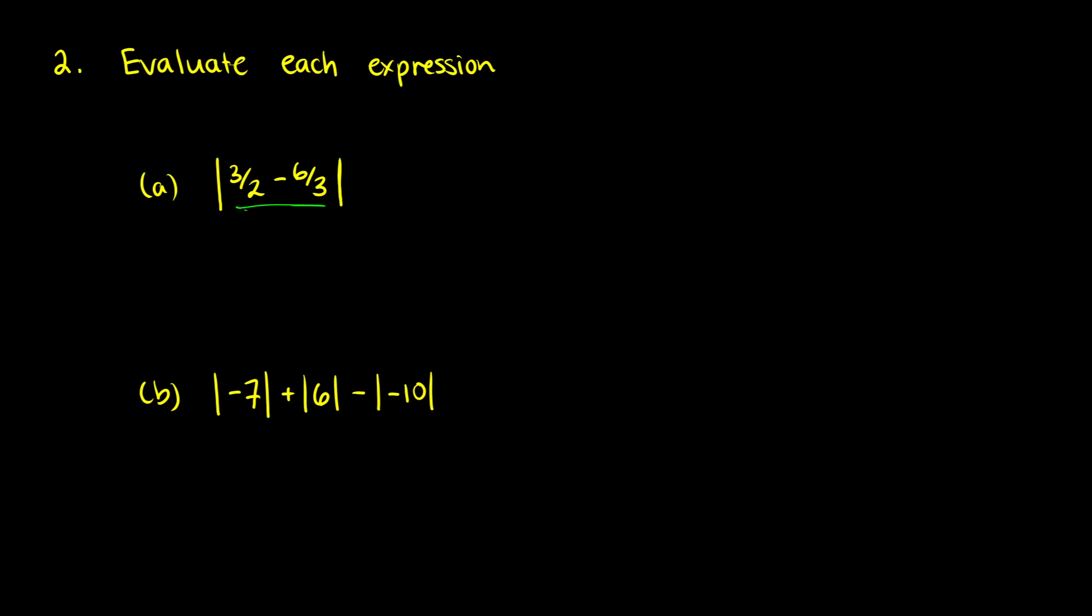We're going to get the absolute value of 1.5 minus 2. I'm just turning these into decimals because they're easy to work with at this stage, especially when the numbers are small. This gives us the absolute value of negative 0.5, which gives us an output of 0.5.